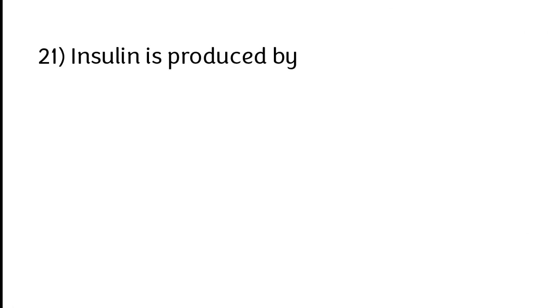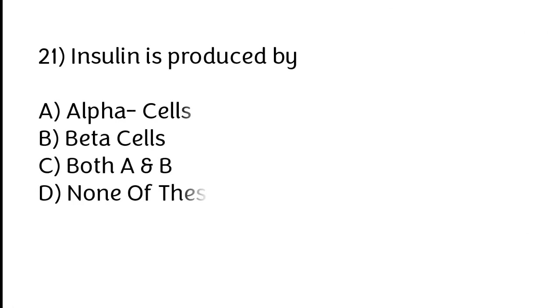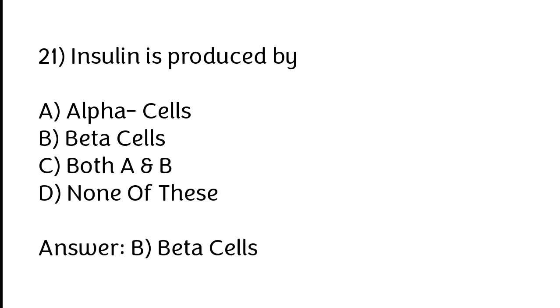Insulin is produced by: A) Alpha cells, B) Beta cells, C) Both A and B, D) None of these. The correct answer is option B, beta cells.